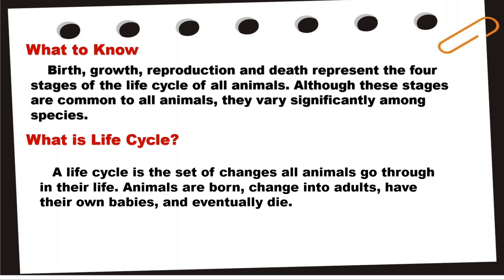What to know in this lesson? Birth, growth, reproduction, and death represent the four stages of the life cycle of all animals. Although these stages are common to all animals, they vary significantly among species.